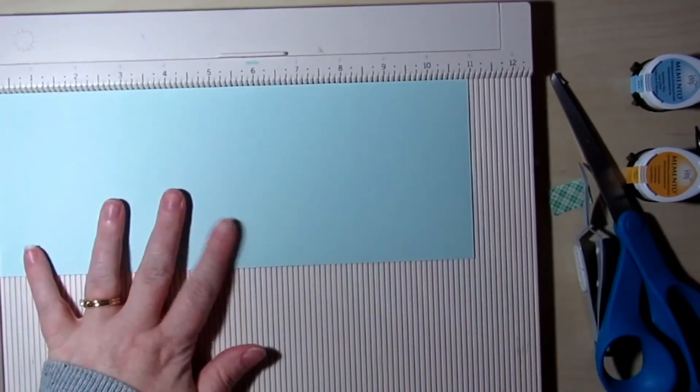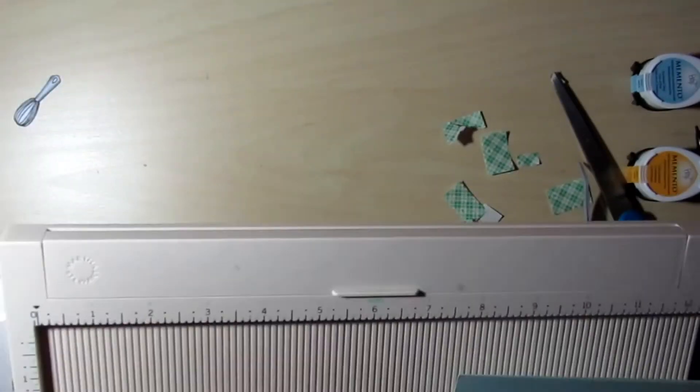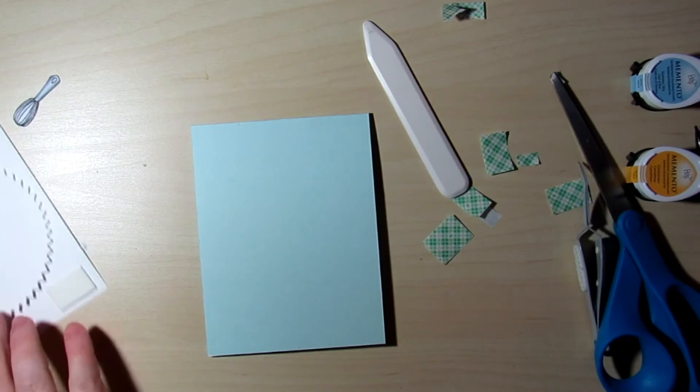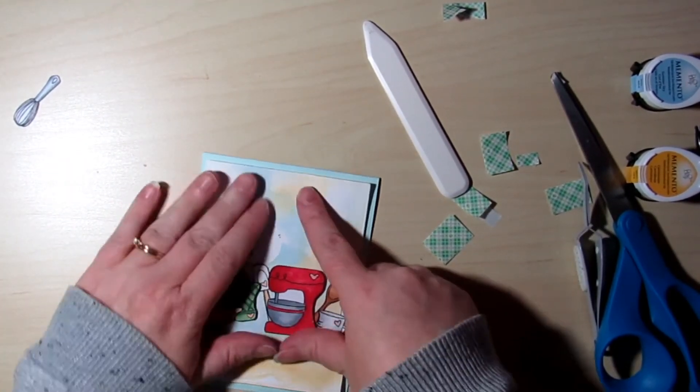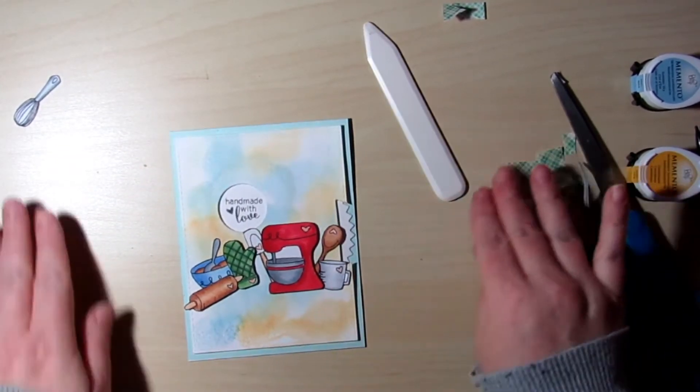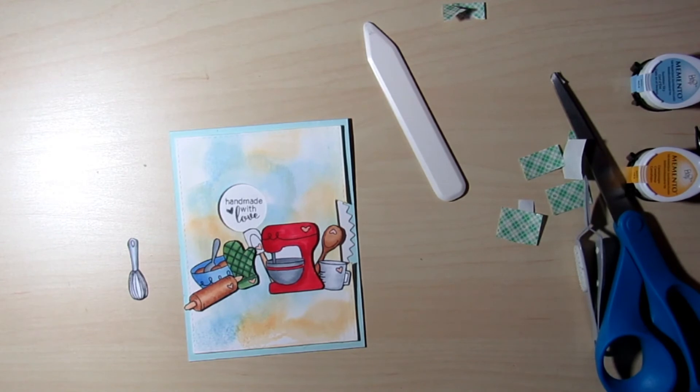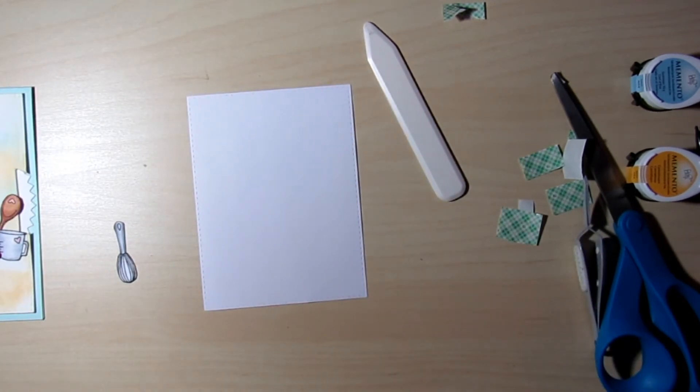So now I'm going to grab a piece of light blue cardstock. This is a hundred pound cardstock for my card base. I'm going to go ahead and adhere my front panel. Make sure that it moves. And then I'm going to grab a piece of white cardstock for the inside of my card.